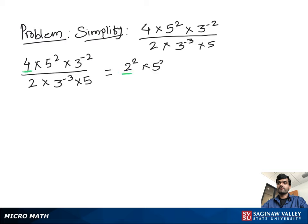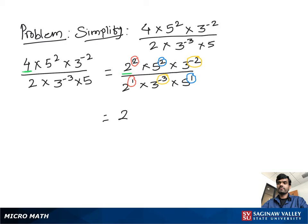...times 3 to the negative 2, divided by 2 to the positive 1 times 3 to the negative 3 times 5 to the positive 1. Using exponent properties, we subtract the powers, so you can write 2 to the 2 minus 1, times 5 to the 2 minus 1, times 3 to the negative 2 minus negative 3.